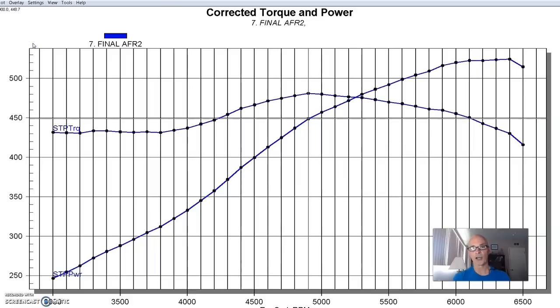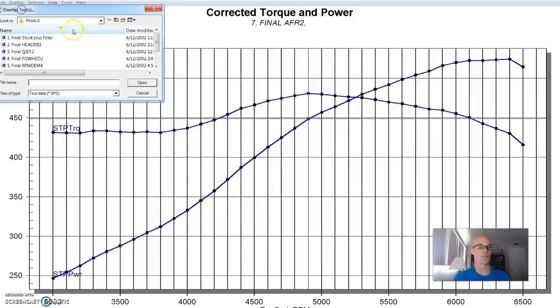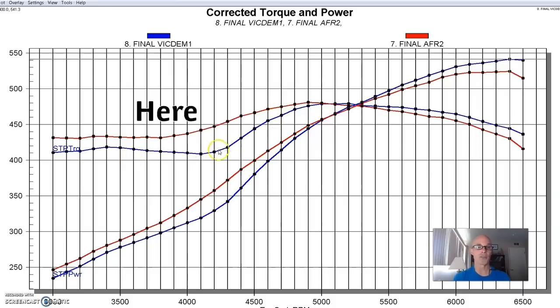So this was with our Airflow Research heads and the big Comp cam. Now here's what happened after we swapped over from the dual plane RPM air gap over to a single plane Victor Jr. with the same Demon carburetor. So equipped with the single plane, which is probably a good combination for this because since we were making power out at 6,500, the single plane worked pretty well out there. It made 541 horsepower, so it was up quite a bit. But as you can see, and it's typical of a single plane versus a dual plane intake test, we lost a lot of low speed power with that single plane.